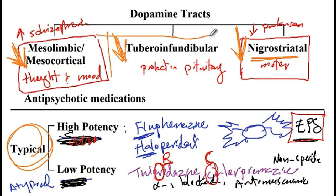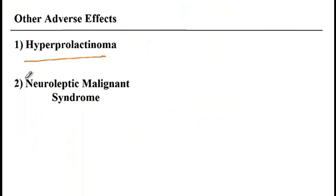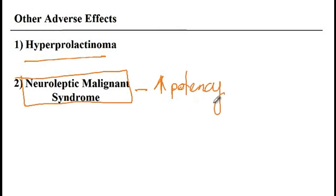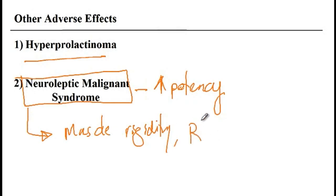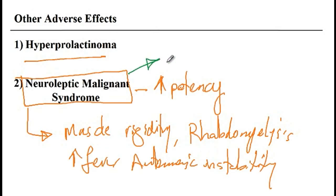Decreased dopamine in the tuberoinfundibular tract causes hyperprolactinemia. Additionally, patients can present with neuroleptic malignant syndrome, which is more commonly seen with high potency typical antipsychotics like fluphenazine or haloperidol. Symptoms include muscle rigidity, rhabdomyolysis, high fever, and autonomic instability. Treatment involves dantrolene or dopamine agonists such as bromocriptine.